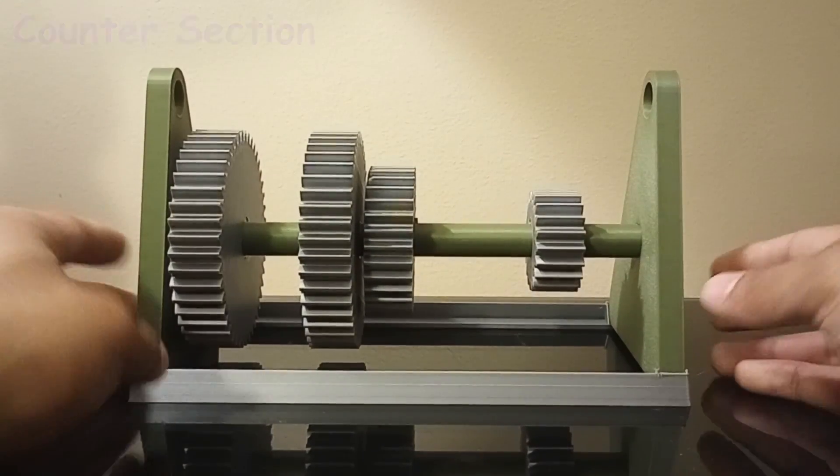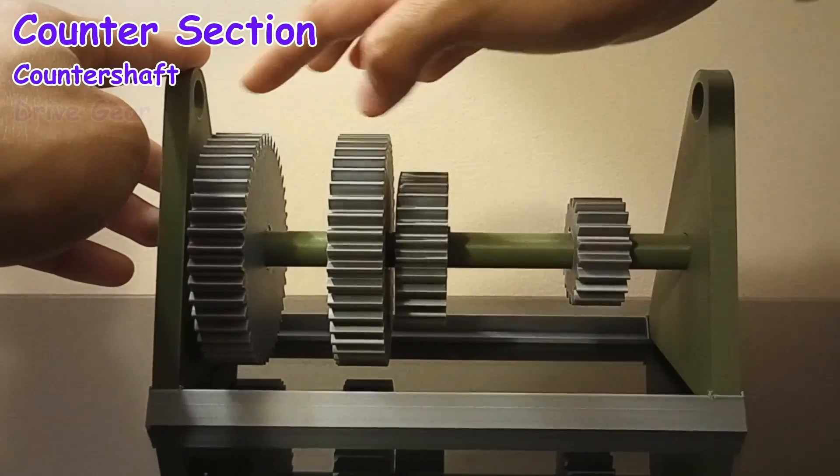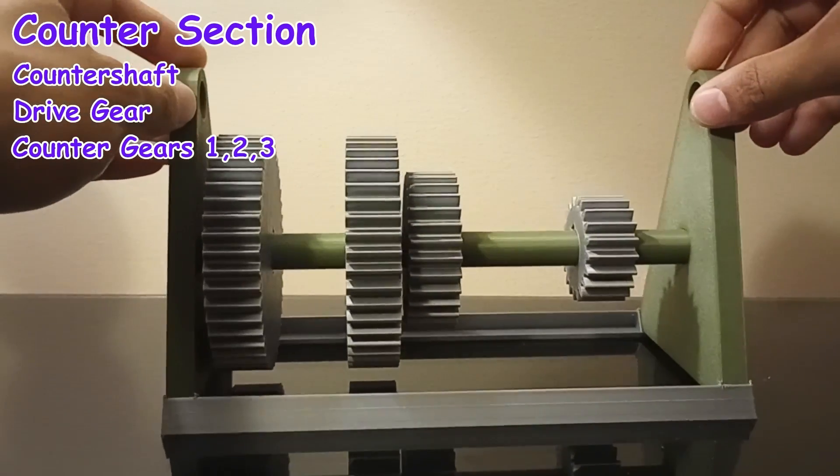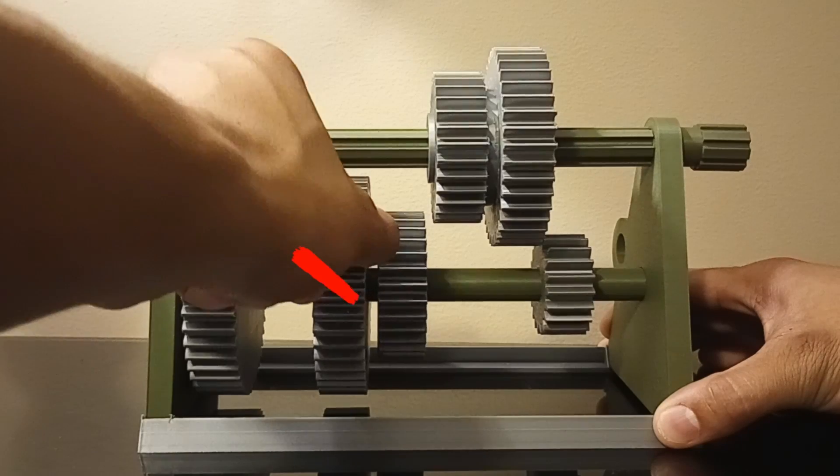Moving down, we'll find the counter section, which holds the counter shaft, counter shaft drive gear, first, second, and third counter gears. And keep in mind that the gears in this section may not move from side to side.